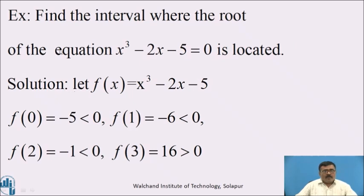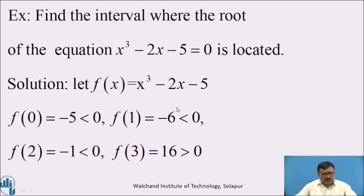Now, find the interval where the root of the equation x³ − 2x − 5 = 0 is located. Solution: Let f(x) = x³ − 2x − 5. To find the interval, we put x = 0, 1, 2, 3, and so on. Where the sign of f(x) changes either from positive to negative or from negative to positive, the corresponding values of x are taken as the interval.